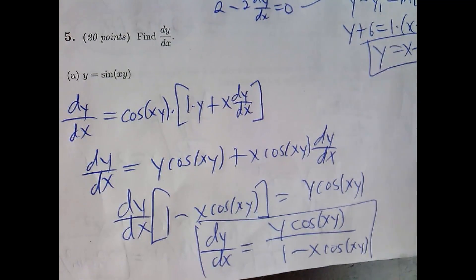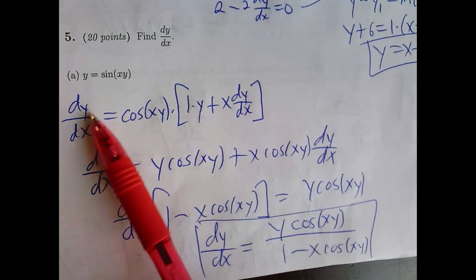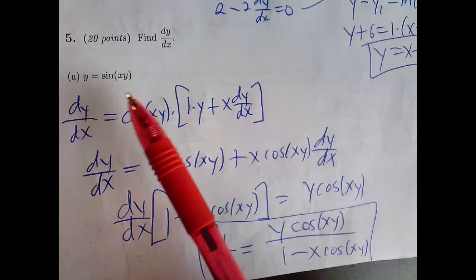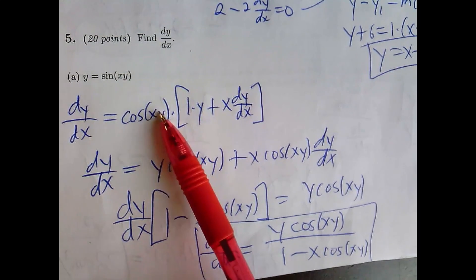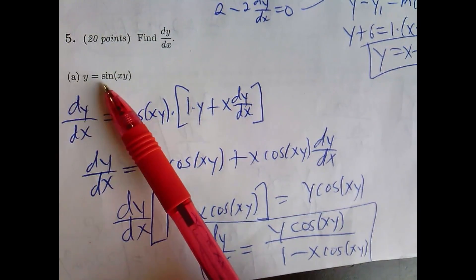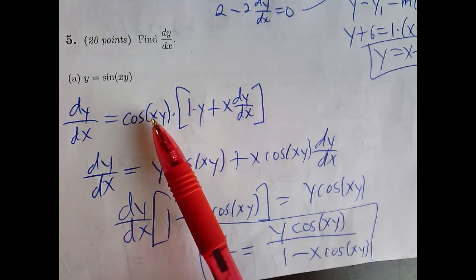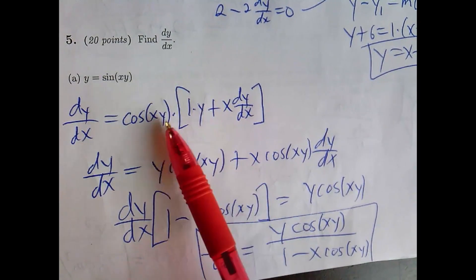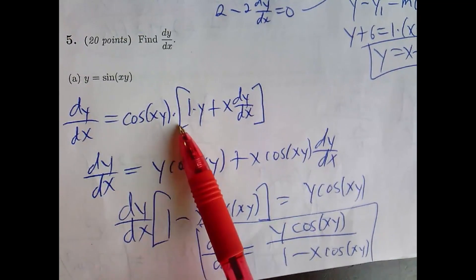Here's another one that's kind of problematic. We have y equals the sine of xy — find dy/dx. You take the derivative of both sides with respect to x, so the left side is just dy/dx. The derivative of sine is cosine, but you have to multiply by the derivative of the inside function, which is xy. That's a product rule — cosine of xy times the derivative of xy.